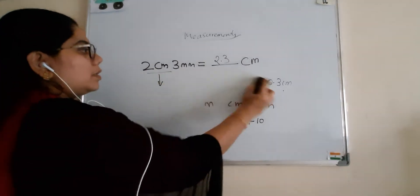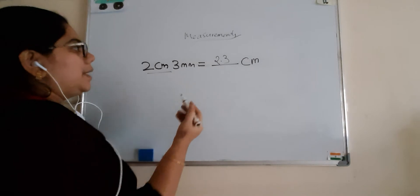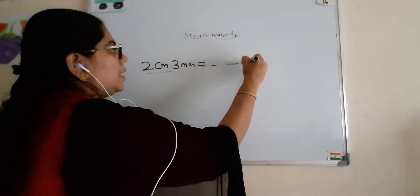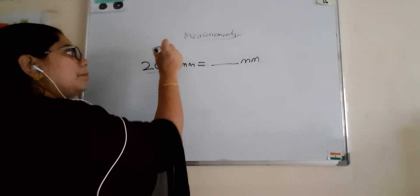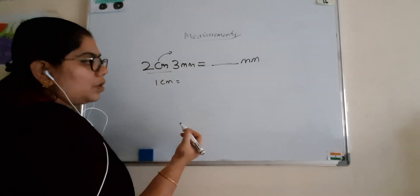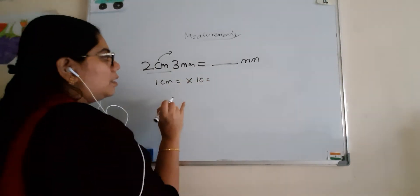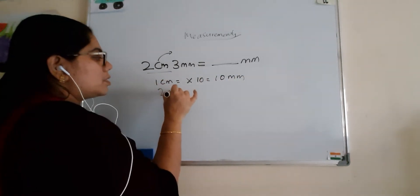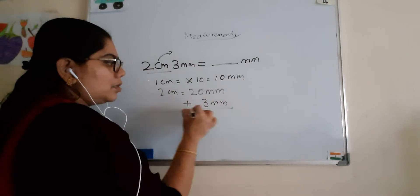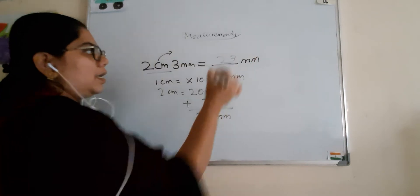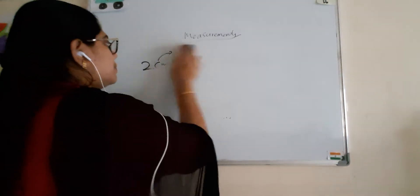Now the same question — we want to convert to millimeter. Already we have 3 millimeters, so that stays as 3. Then centimeter to millimeter: 1 centimeter equals 10 millimeter, because it is one step going that way, so multiply by 10. So 2 centimeter is 20 millimeter (2 into 10 = 20), and adding the 3 millimeter gives 23 millimeter.